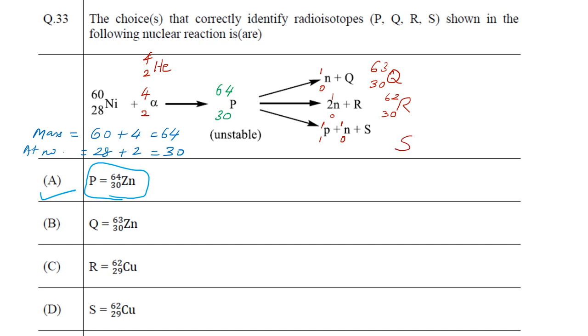Coming to S, the mass number should be minus 2 because 1 proton and 1 neutron are there, so it will be 62. In the denominator, it is only the proton that carries a charge, the neutron doesn't, so 30 minus 1 which is 29.